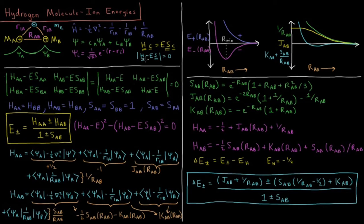Our secular determinant to solve is the determinant of (H minus E·S) equal to zero. We have H_AA minus E·S_AA, H_AB minus E·S_AB, H_BA minus E·S_BA, and H_BB minus E·S_BB — a 2×2 matrix. We assume our wave function is normalized, so integrating over all space confirms it is normalized, meaning S_AA and S_BB both equal 1.